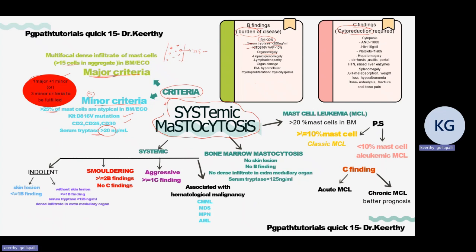C findings indicate cytoreduction required. These include cytopenias: absolute neutrophil count less than 1000, hemoglobin less than 10, and platelet count less than 1 lakh. Organomegaly causing organ failure is also a C finding — such as hepatomegaly causing ascites, cirrhosis, or portal hypertension; raised liver enzymes; splenomegaly; and GI infiltration causing malabsorption, weight loss, and hypoalbuminemia. Bone involvement leads to osteolysis, fractures, and bone pain.